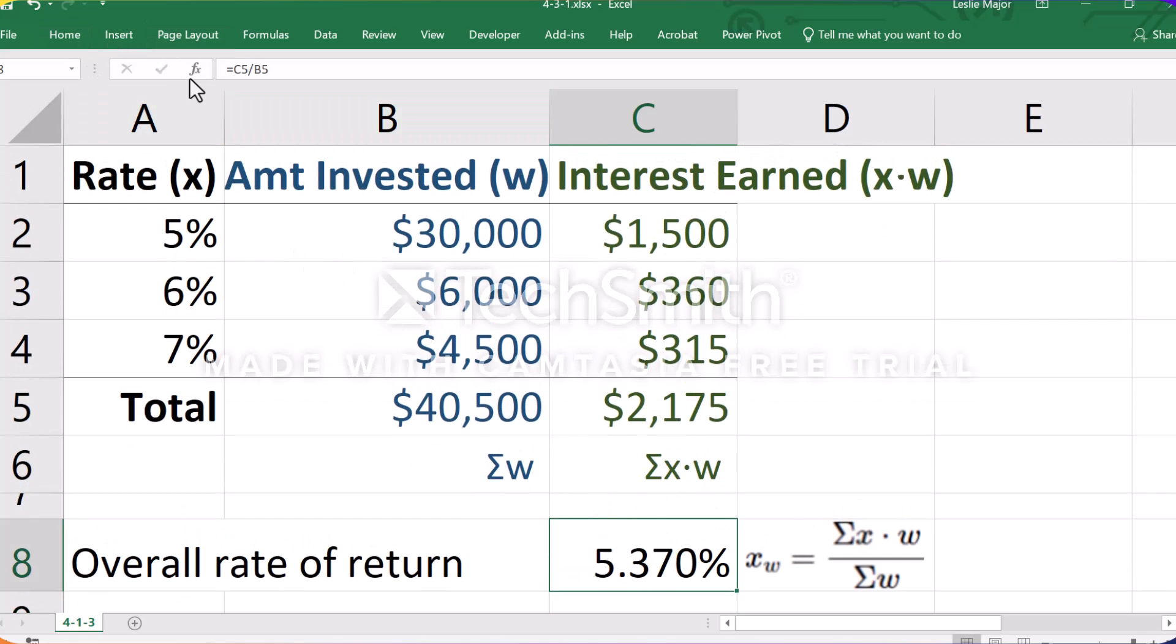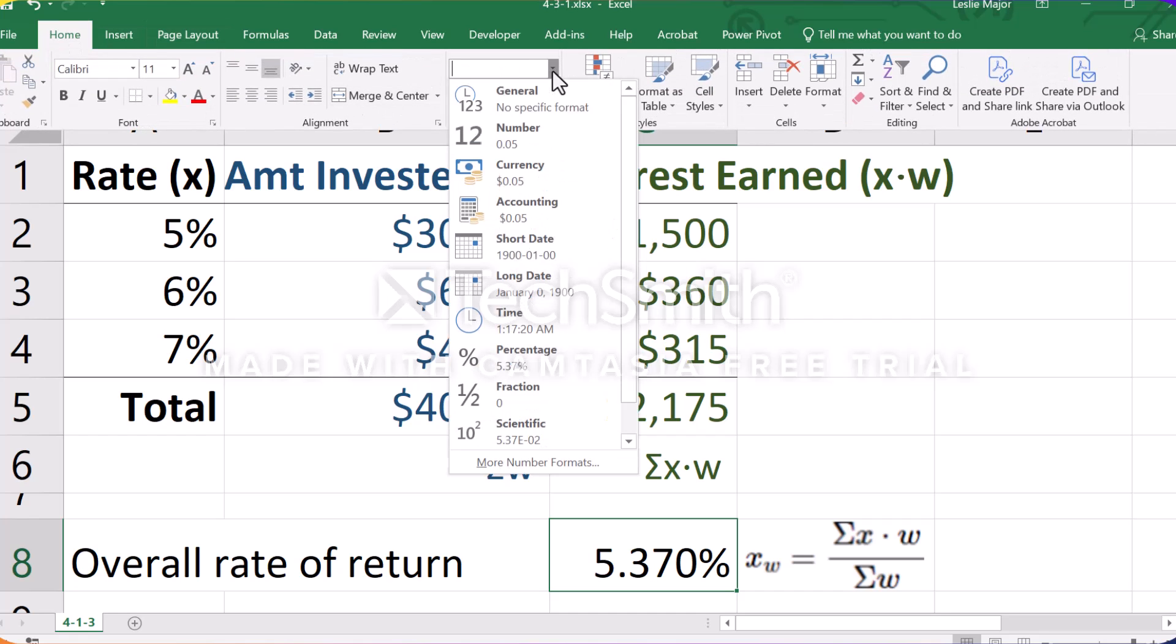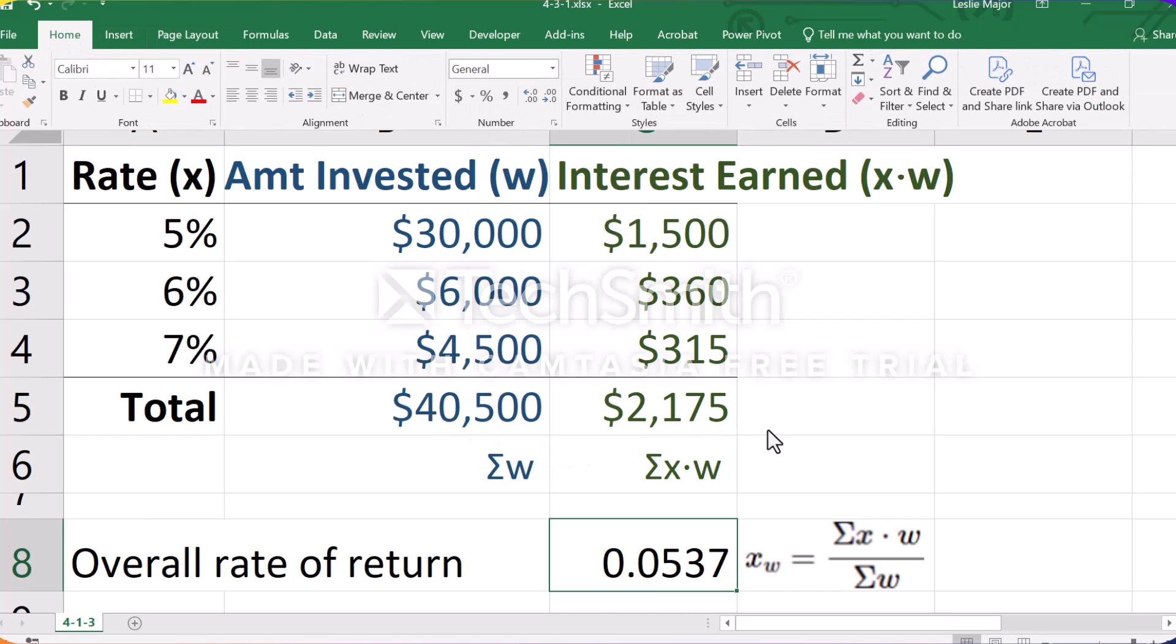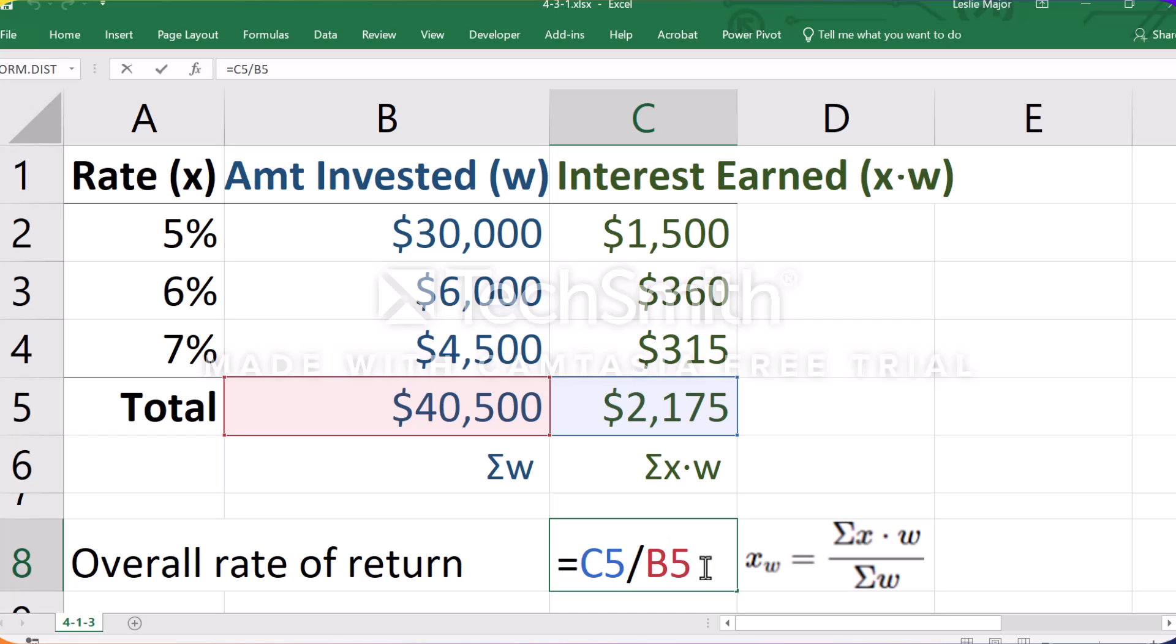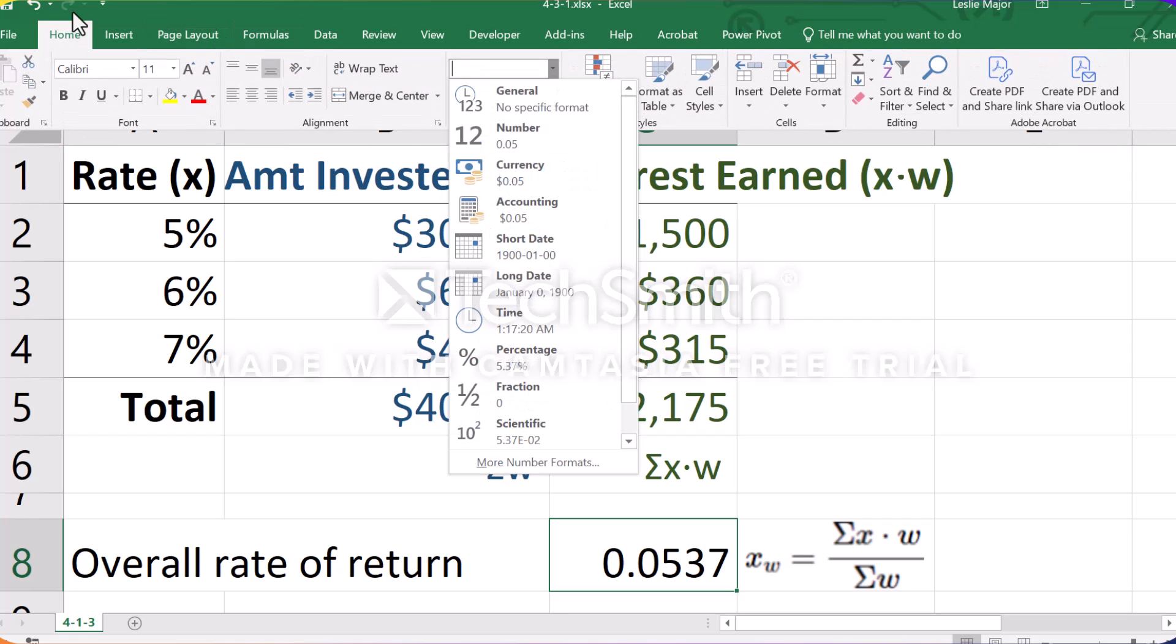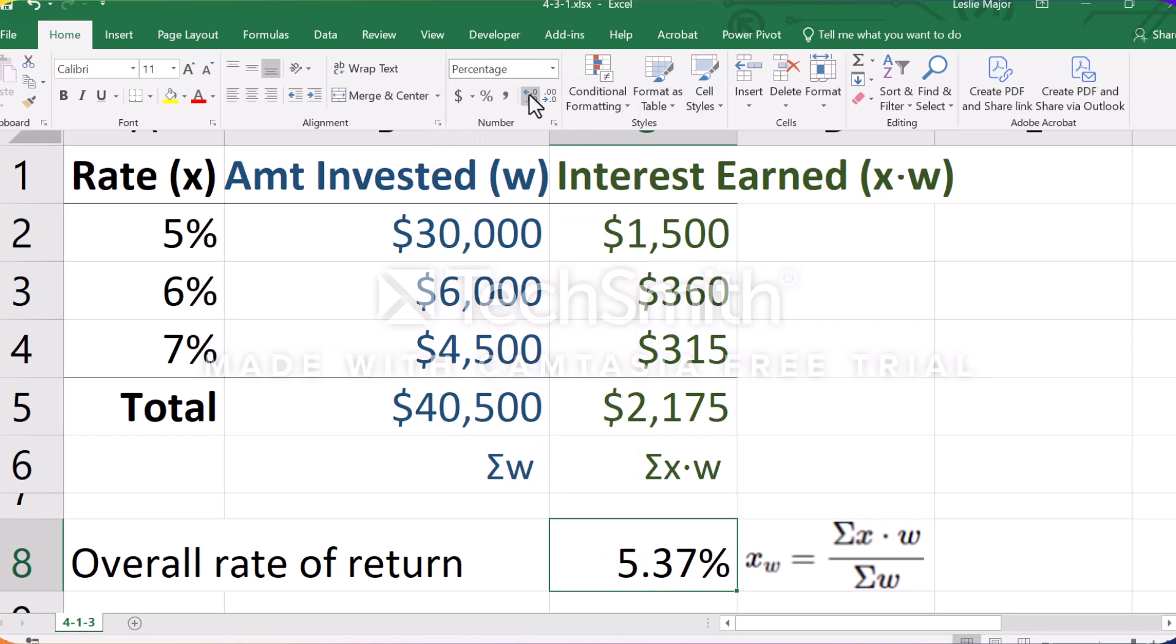Note here to make this display nicely, I'm just going to show you one thing. When you do this calculation, here's the answer you get: 0.0537, which is correct. But I want to see this as a percentage, so go to the Home tab, reformat this as a percentage, and you can change the number of decimals displayed here.